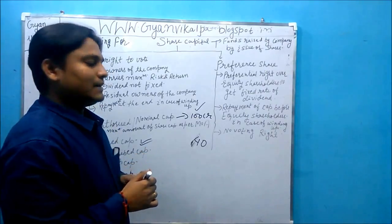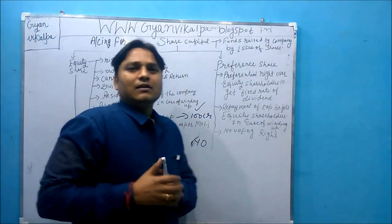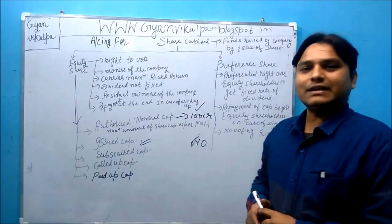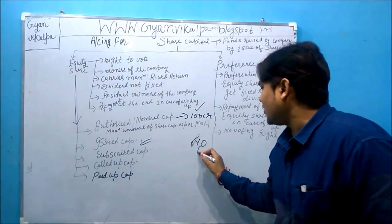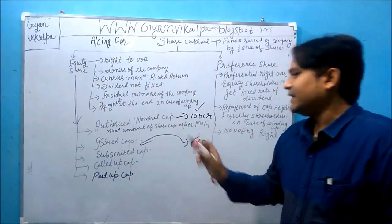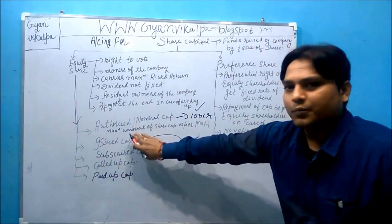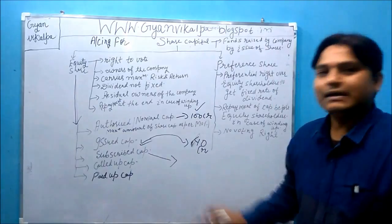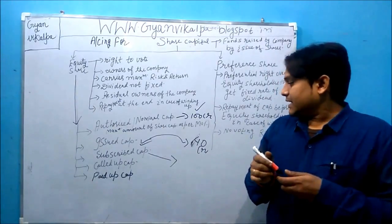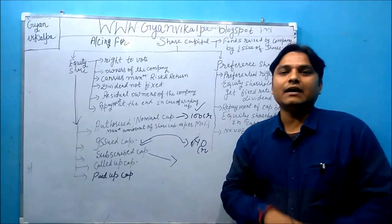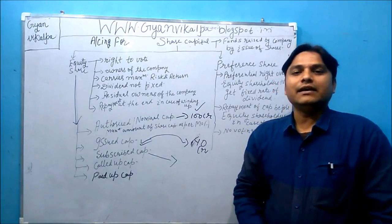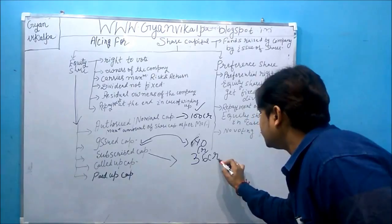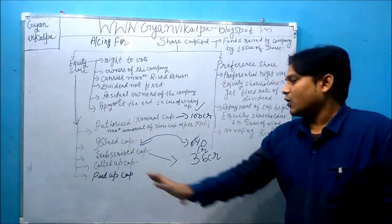No company will want to dilute its control and ownership, so they generally keep the percentage for general public up to 49 percent. Taking an example of issued capital as 40 crore. Subscribed capital is that part of issued capital which has been subscribed by the general public for investment in the company. The company sets a limitation that at least 90 percent of the subscription is required, otherwise the company has to take back its issue. So taking 90 percent — 36 crore has been subscribed.